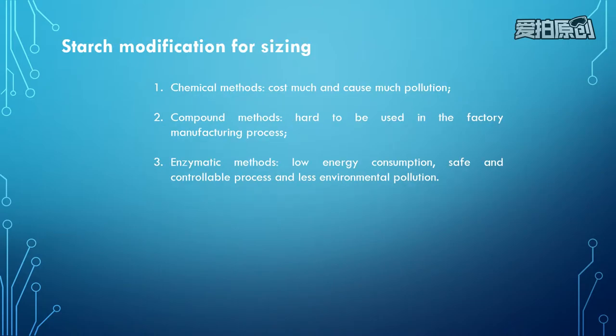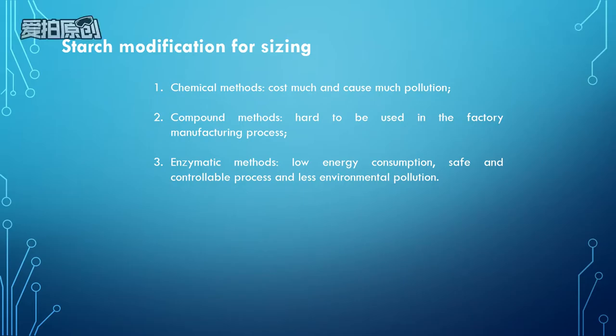There are several ways to do the sizing starch modification process. The first is chemical methods, but this method costs too much and causes significant pollution. The second way is compound methods, which are hard to use in factory manufacturing. The third and extremely popular one is the enzymatic method, which has lower cost, is safe and comfortable, and causes less environmental pollution.